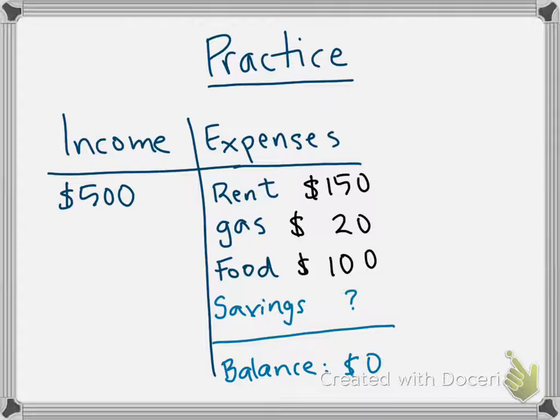Let's take a quick practice. Let's say I have an income of $500 and I have some expenses: rent $150, gas $20, food $100. I want to know how much money I can have for savings. Because you know the balance should be zero, this becomes a part-whole type of problem.